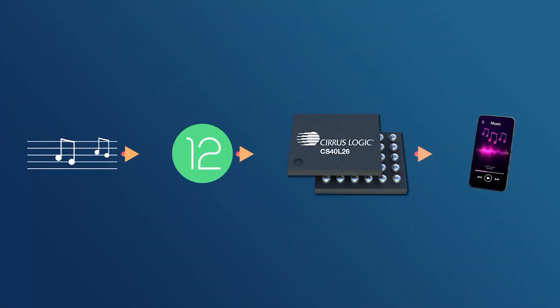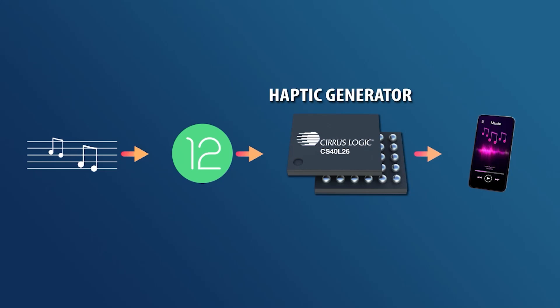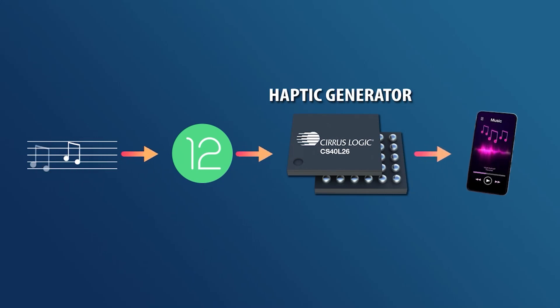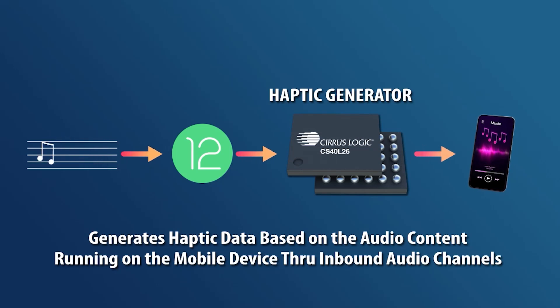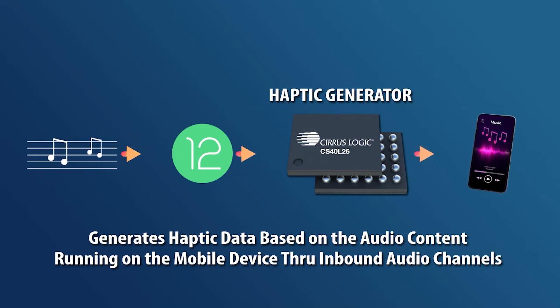This opens up a whole new area for meaningful audio driven haptic feedback. For your phone to support that, it needs special hardware that's actually able to do this dynamic conversion of audio to haptic data on the fly. Cirrus Logic build the chips — they have the technology that allows audio channels to be converted into haptic data on the fly without any lag, so the audio experience and the haptic feedback are synchronized.